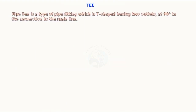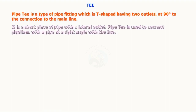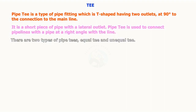Pipe T is a type of pipe fitting which is T-shaped, having two outlets at 90 degrees to the connection to the main line. It is a short piece of pipe with a lateral outlet. Pipe T is used to connect pipelines with a pipe at a right angle with the line. There are two types of pipe Ts: equal T and unequal T.